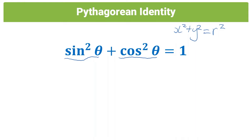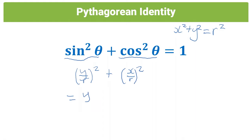Just to show you guys the proof of this, I'm going to show the derivation of the formula. From the earlier videos, we know that the definition of sine is y over r, and in this case sine is squared. We also know that cos is x over r, and in this case it's also squared. So if we open this up, we get y² over r² plus x² over r².